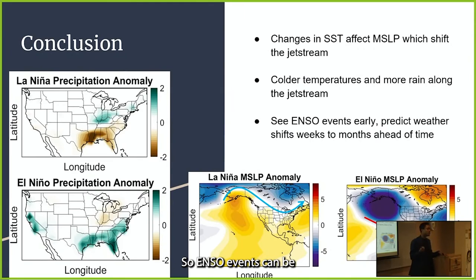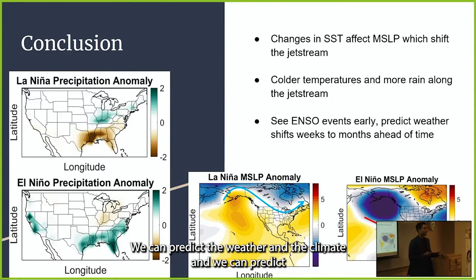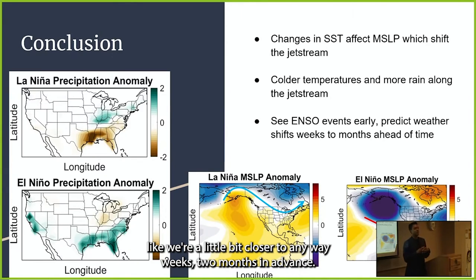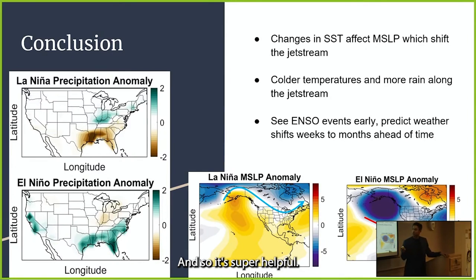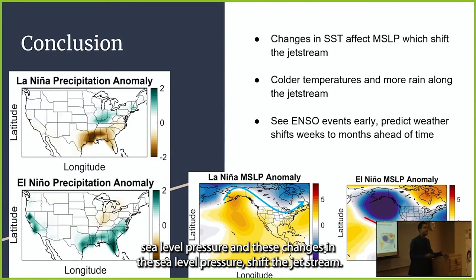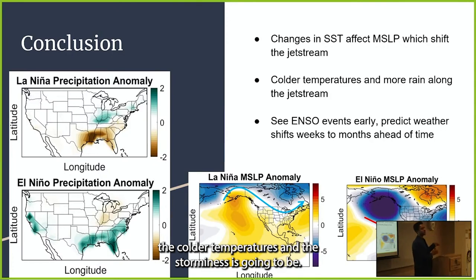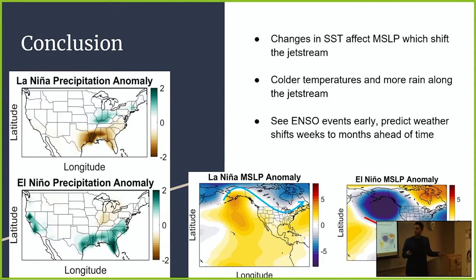So why does this all matter? ENSO events can be predicted a season or so in advance, meaning we can predict weather and climate conditions weeks to months ahead — which is super helpful. I also found that changes in SST result in changes in mean sea level pressure, and those pressure changes shift the jet stream. Shifting the jet stream means you're changing where colder temperatures and storminess will occur.